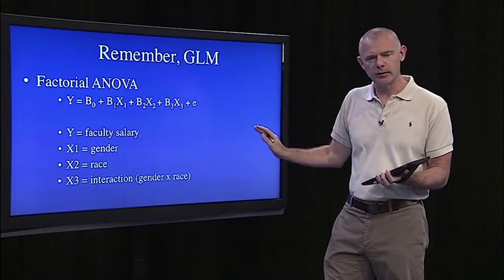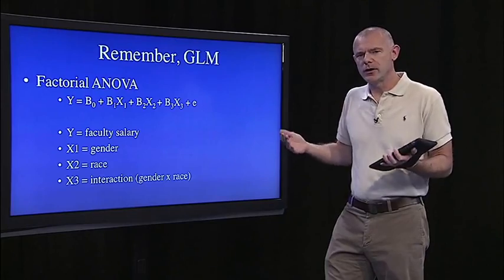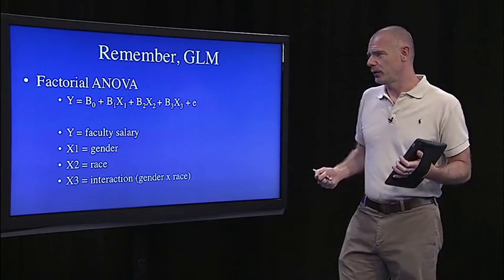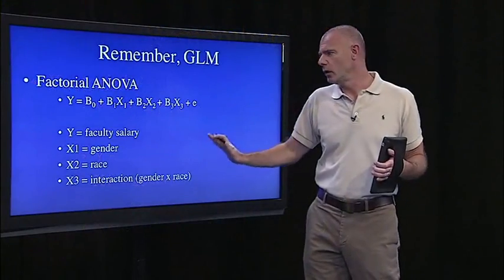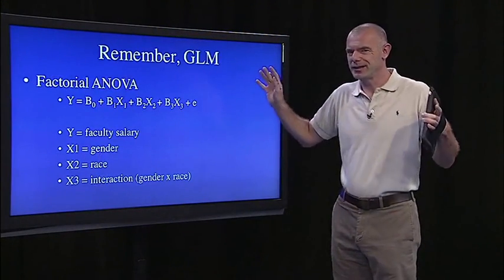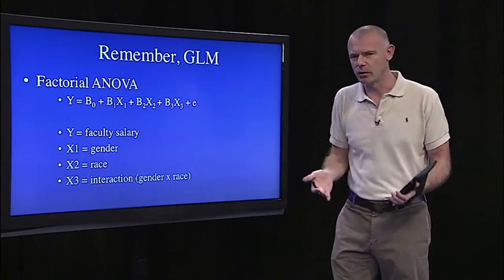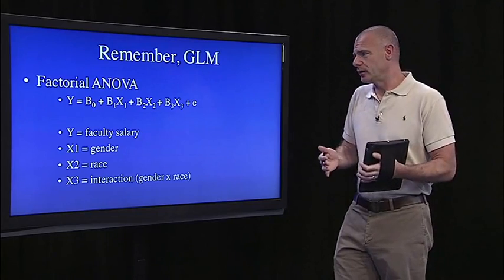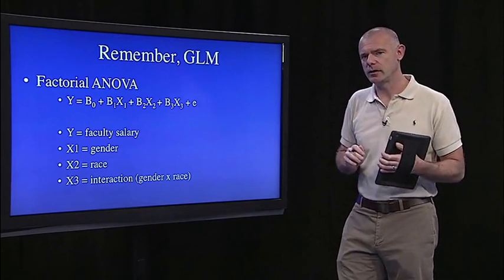It's just that now all of my predictors are categorical. For example, predict faculty salary from gender, race, and the interaction of gender and race - those are categorical predictors. We would run this as a factorial ANOVA rather than a multiple regression, because in multiple regression we would have to dummy code everything and create multiple interaction terms. So if we just run it as a factorial ANOVA using the AOV function in R, it's a lot simpler.